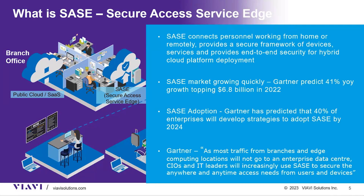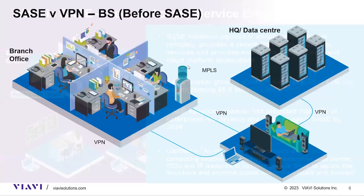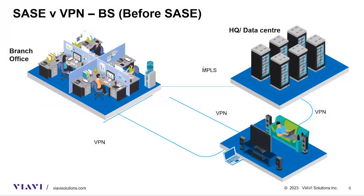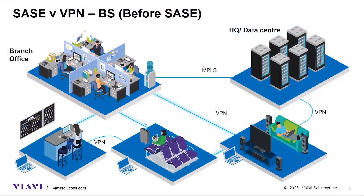Looking at the world before SASE: how most of us access our HQ or data center, whether from a branch office, home, café, or remote location. In the old world — three to four years ago — enterprise remote employees used VPN to access corporate files, applications, and data. VPN created a secure tunnel between their computer and the corporate data center. Traffic through this connection is isolated from the rest of the internet and encrypted, giving it an extra layer of security.